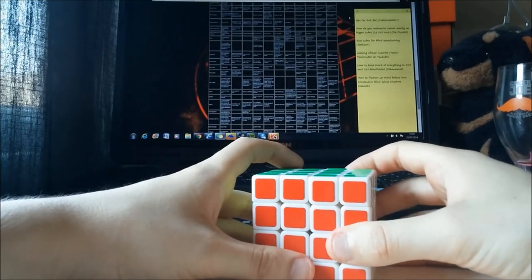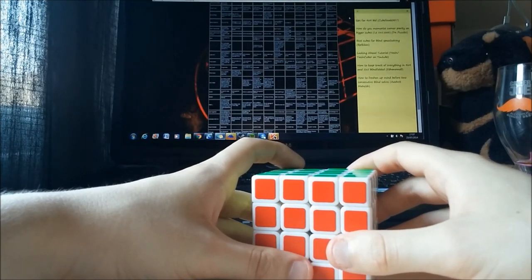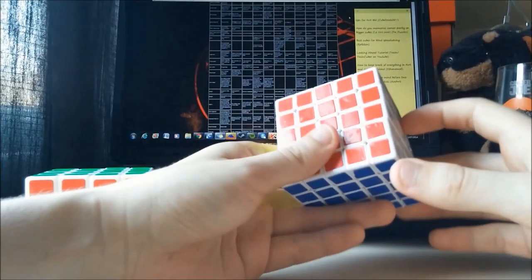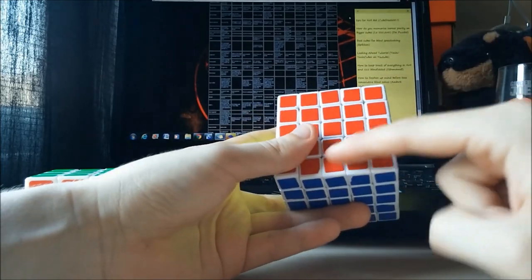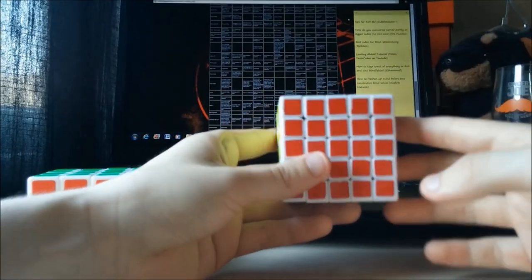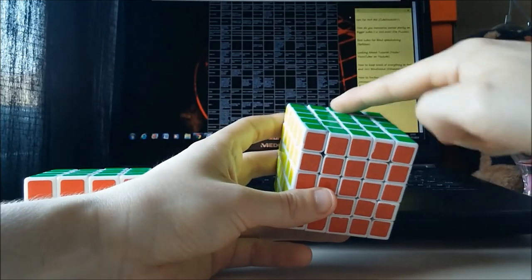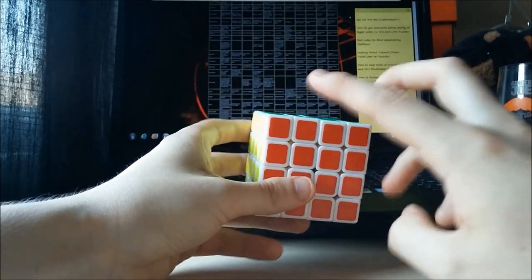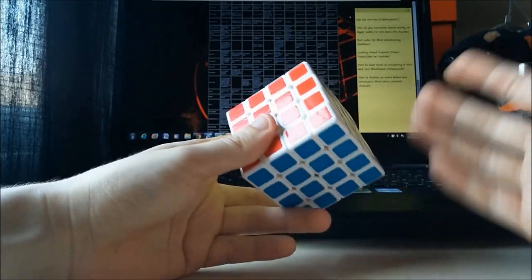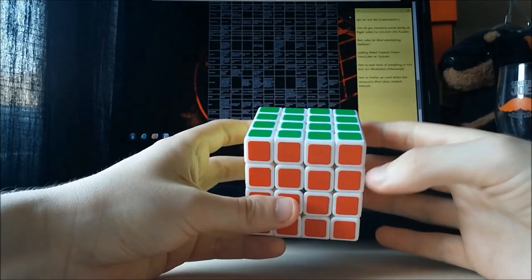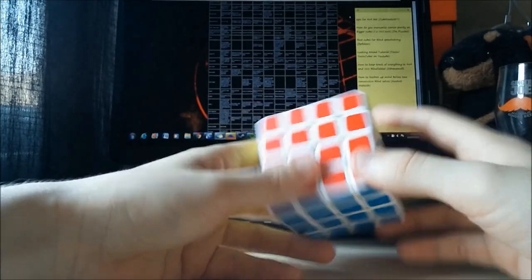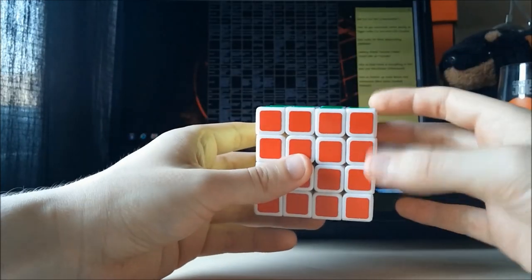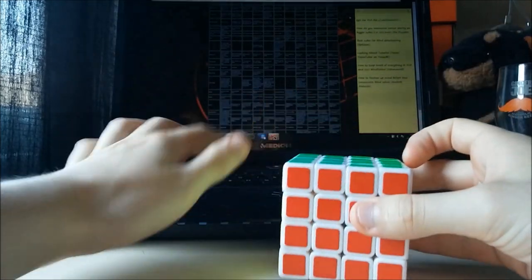Okay, how do you memorize corner parity on bigger cubes, i.e. 5x5 or 6x6? Well, 5x5, you don't need to remember that you have parity, just that you have wing parity. And because you'll have a leftover letter at the end or you'll notice you have 3x3 parity, it doesn't really matter. The way I remember corner parity on even numbered cubes is I cross my legs. As soon as I've solved my corners, I'll realize if I have parity or not and I'll cross my legs. Simple as that. When it comes to solving centers and I've finished, I check whether my legs are crossed and that tells me whether I need to solve parity.